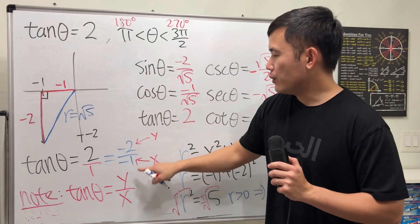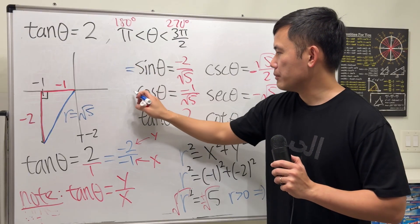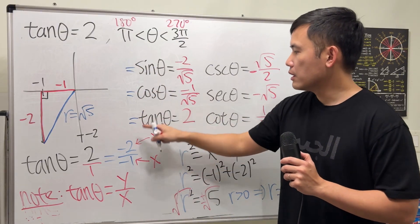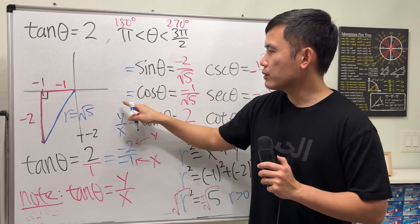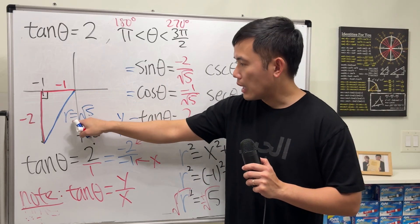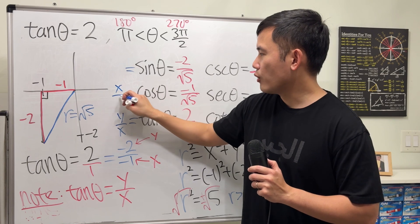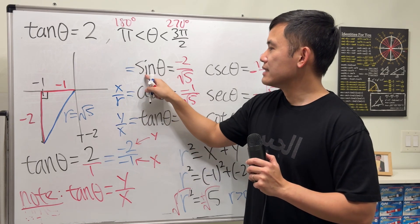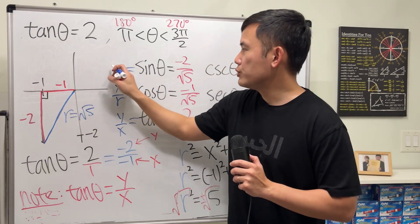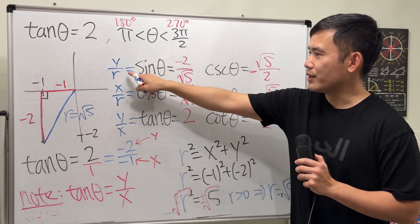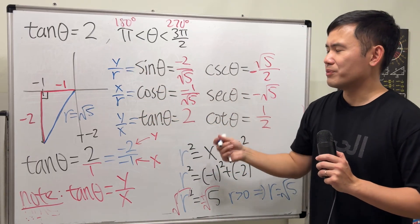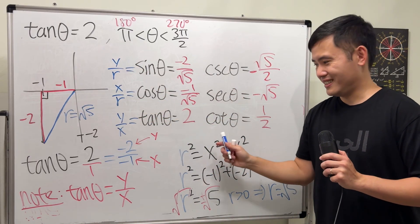By the way, if you also want to use the definition that I mentioned earlier, tangent is y over x. But for cosine, which is adjacent over hypotenuse, that's technically x over r. Sine is opposite, which is the y value, over r. So you can also use this to get this answer. Same thing. Hope this helps, that's it.